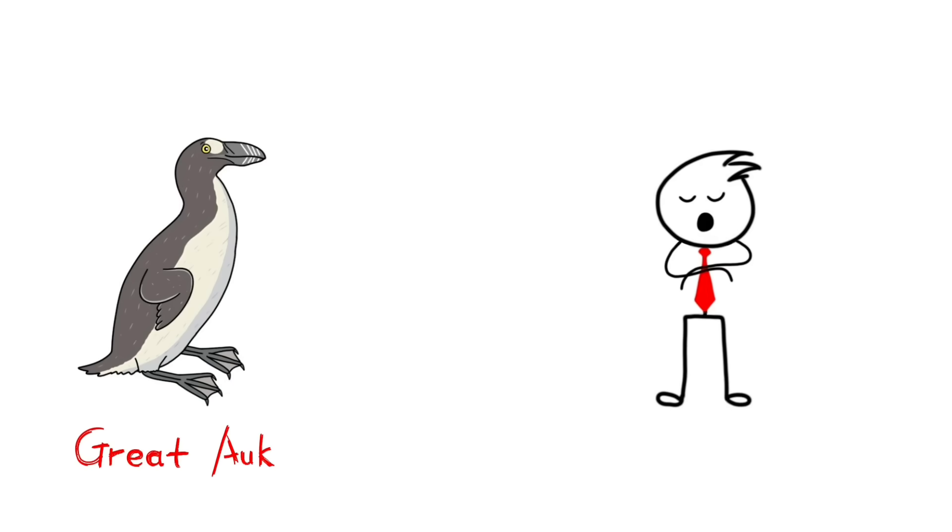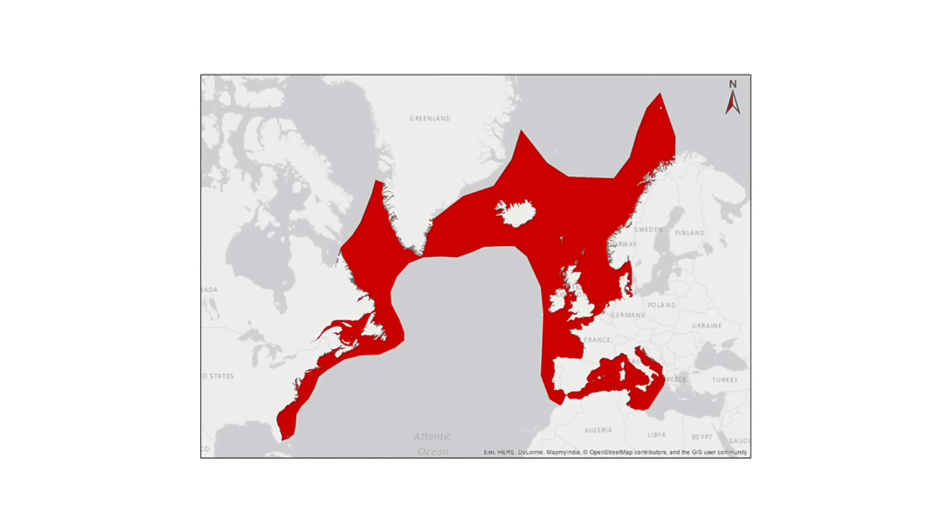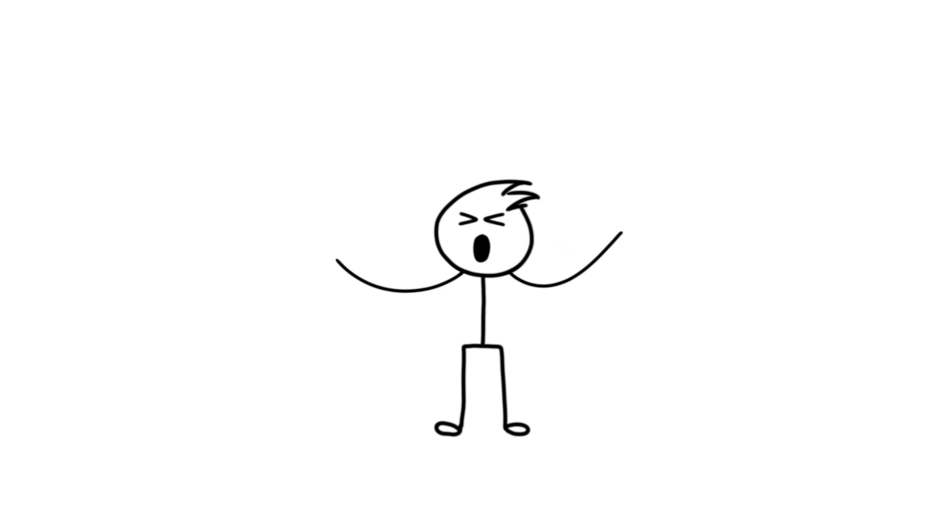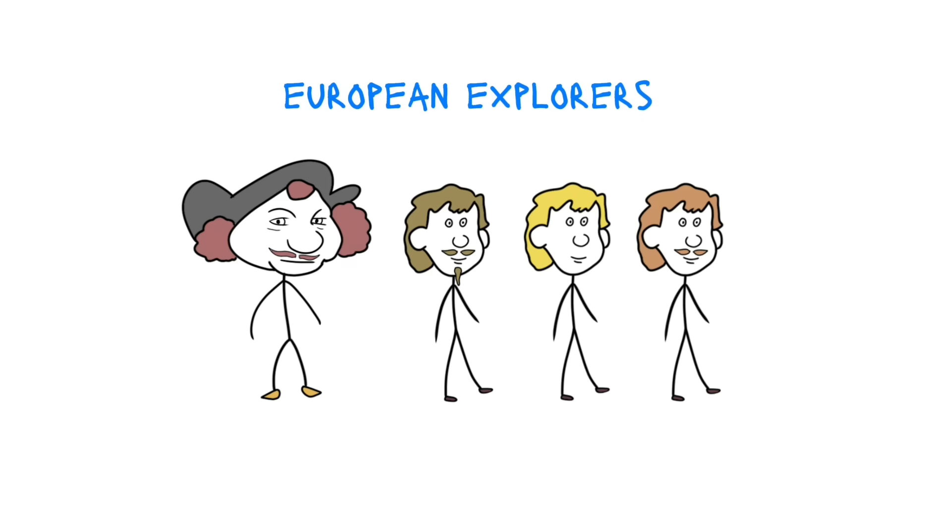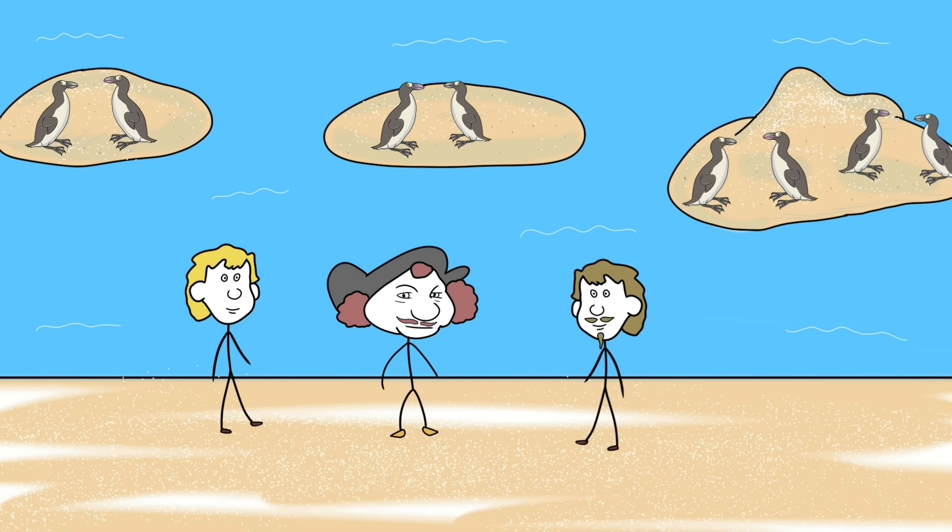This was a great auk, and there were some 2 million auks roaming in the North Atlantic region, from East US to Northern Spain. It was the age of discovery, and European explorers were trying to find new places. In around 1500 AD, they found the breeding ground of the great auks.